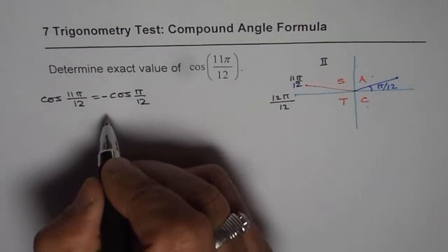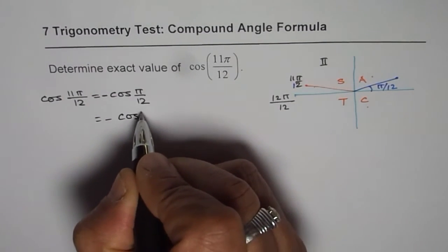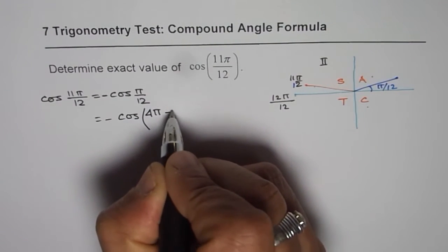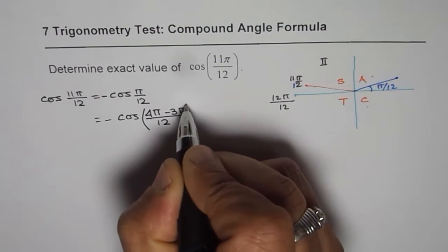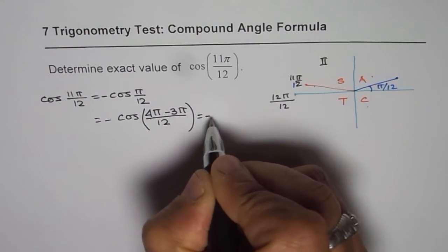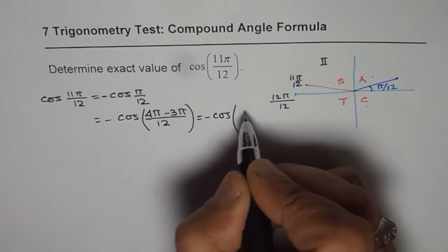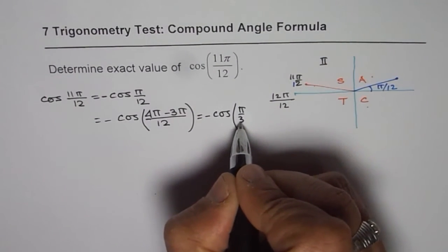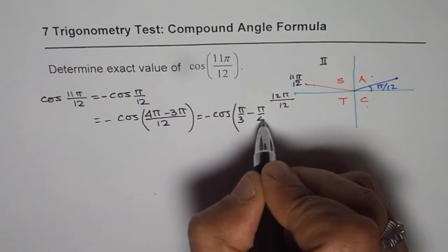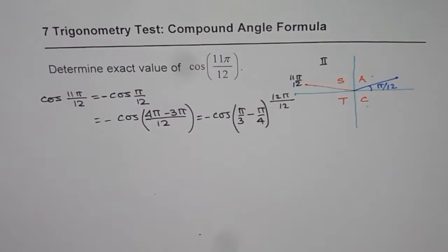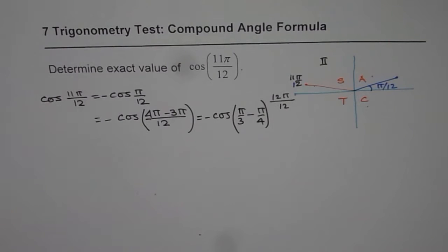Now we can write pi by 12 as cos of 4 pi by 12 as cos of 4 pi minus 3 pi. Do you see that? Over 12. Which is like minus cos. 4 pi divided by 12 will be pi over 3. Minus 3 divided by 12 is 4. So we get pi over 4. So that is how we can write cos 11 pi by 12. So that is a very important step to do.